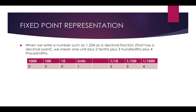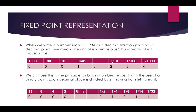If you have a look at this table, we've got thousands, hundreds, tenths, and units or ones, and then we have the decimal point. Then we have 1 over 10, 1 over 100, 1 over 1000. So the number 1.234 is one unit plus two tenths plus three hundredths plus four thousandths. We can use that same principle for binary numbers, except with the use of a binary point.